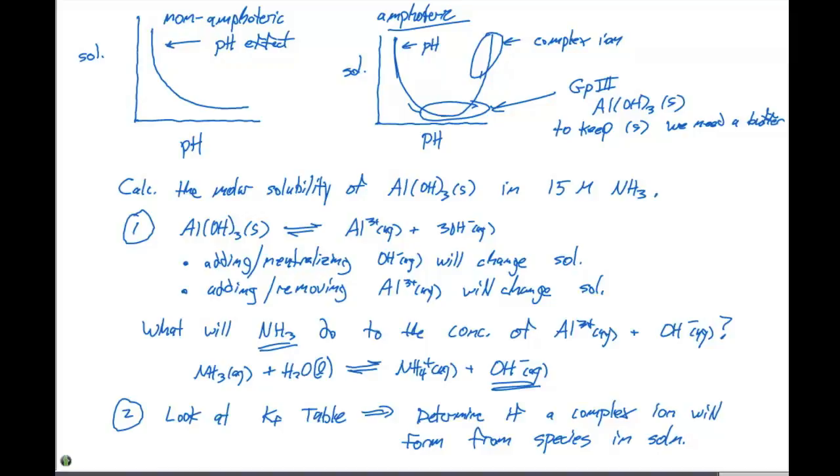If we look at the KF tables, we will see that Al³⁺ does not form a complex ion with ammonia. But it does form a complex ion with the hydroxide ion. So we have Al³⁺ plus 4OH⁻ is gonna be in equilibrium with Al(OH)₄⁻. And this is gonna have a KF value equal to 7.7 times 10 to the 33rd power.